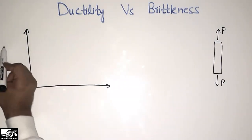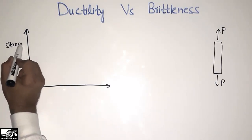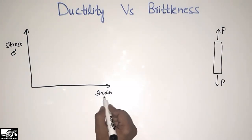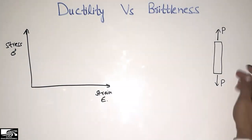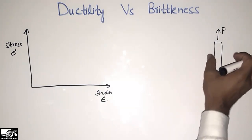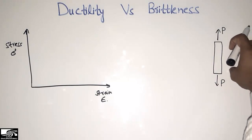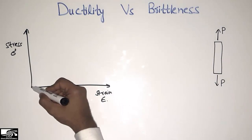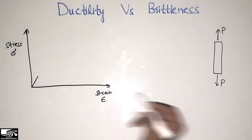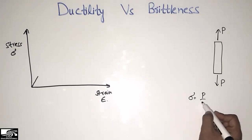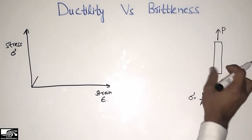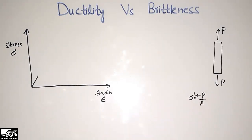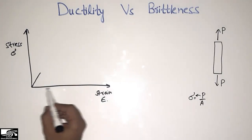Now I'm drawing the stress-strain graph here on the left side. Stress is on the y-axis, represented by sigma, and strain is on the x-axis, represented by epsilon. When the load is applied, this material will start stretching. With the increase of load, the stresses will increase — stress equals load over the cross-sectional area of this material.